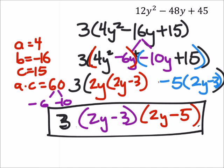And again you could check this, you could factor the 3 in, and then use the foil. And you'd get the same thing that we started with.